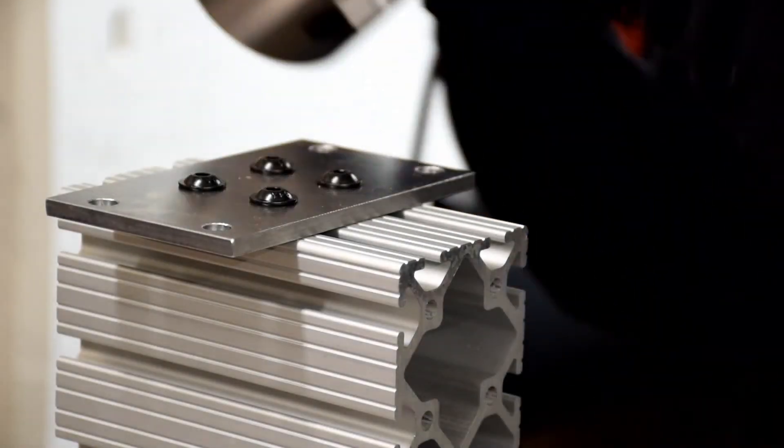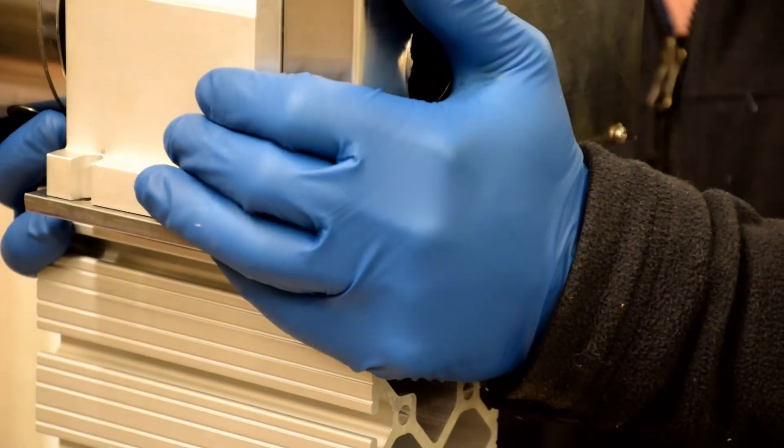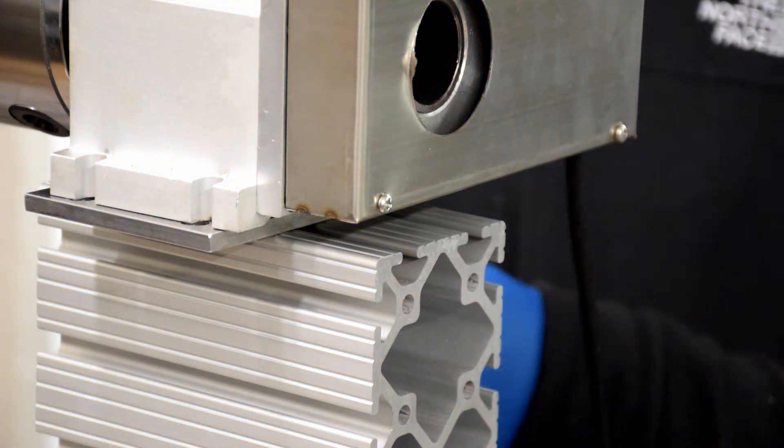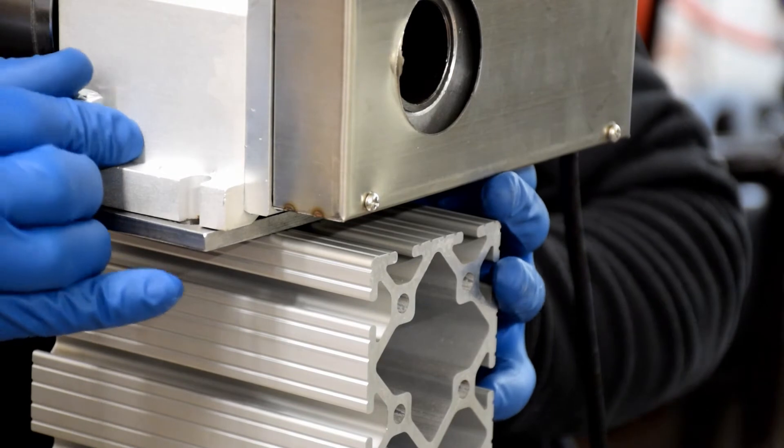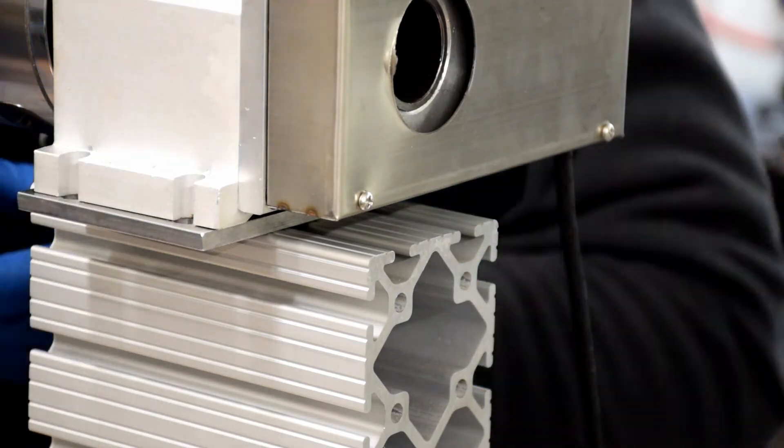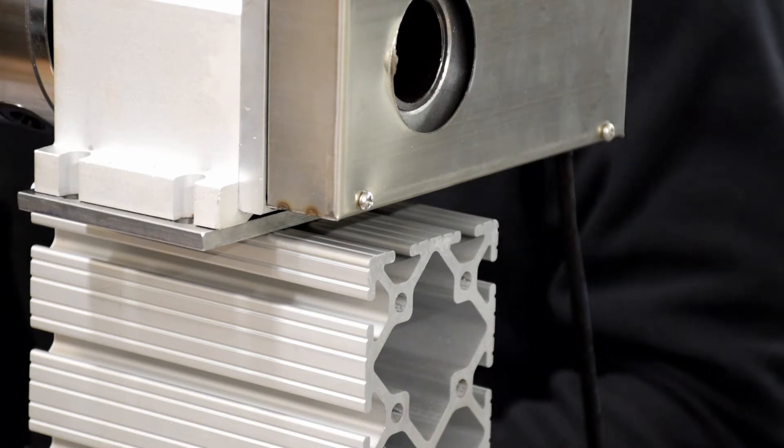Place the chuck assembly on top of the mounting plate. We're going to be using five sixteenths by one and a half inch bolts to attach the chuck to the mounting plate. We're also going to be using a washer and a lock washer for every bolt.